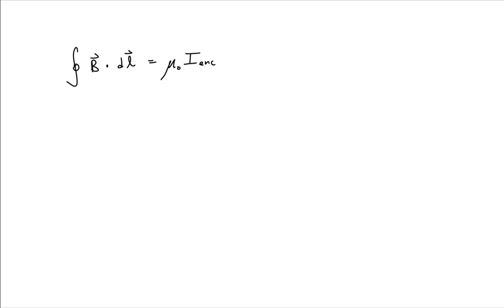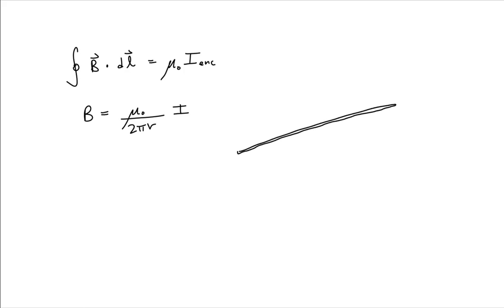Our goal for this problem is to show, using Ampere's Law, that the magnitude of the magnetic field at a distance r away from a long current-carrying wire is equal to mu-naught over 2 pi r times the current in that wire. Let's take a wire — this wire is very long, meaning the length of the wire is much greater than the distance r at which we want to find the magnetic field.